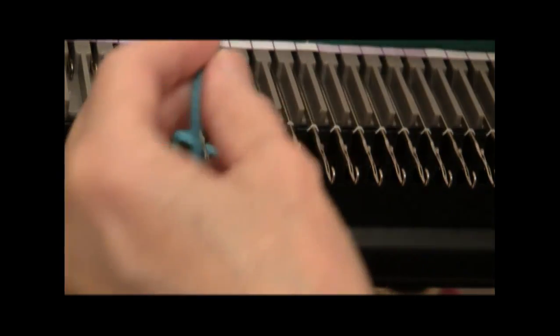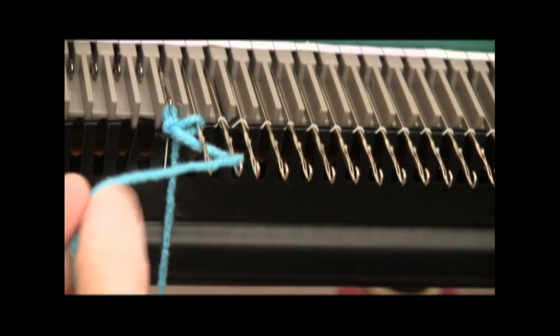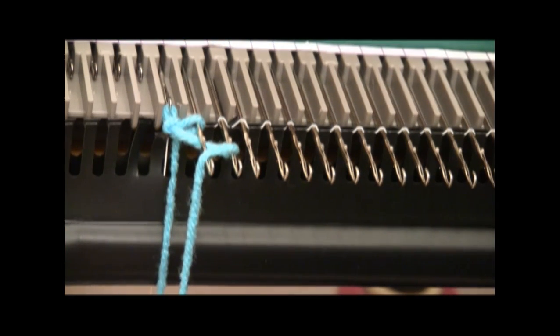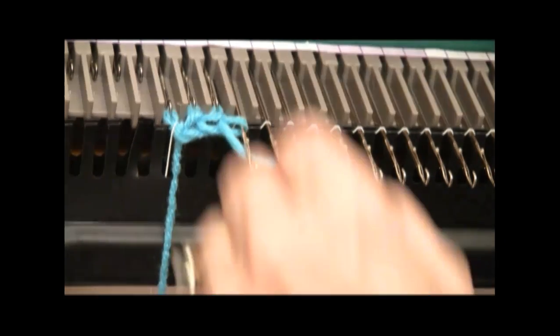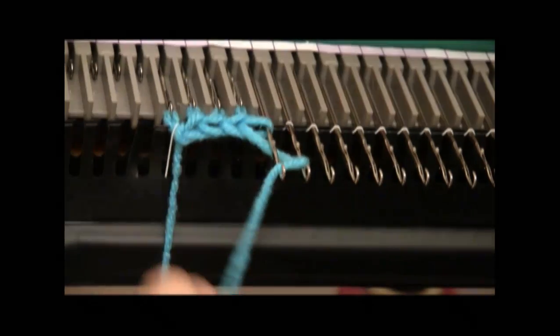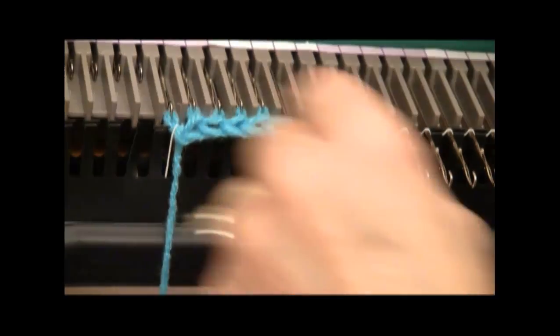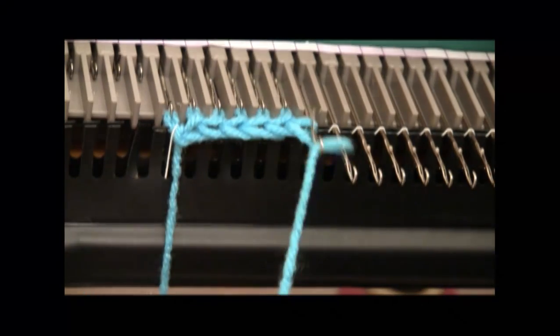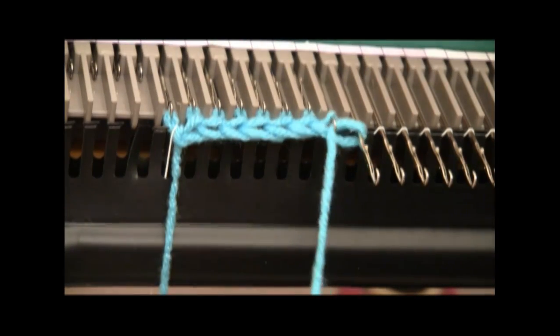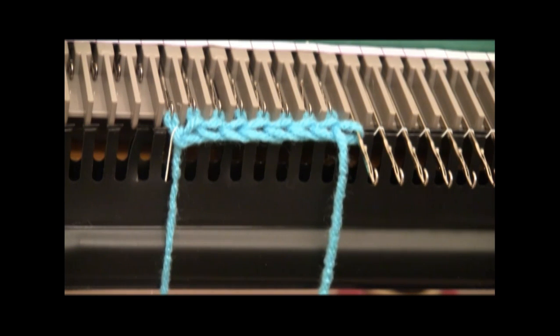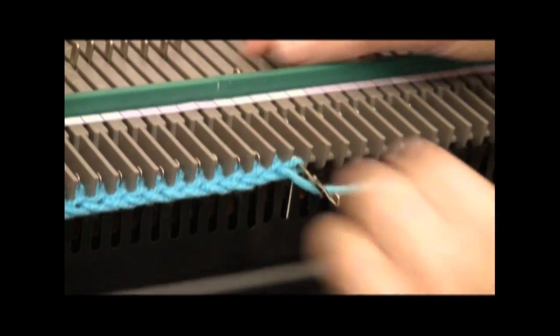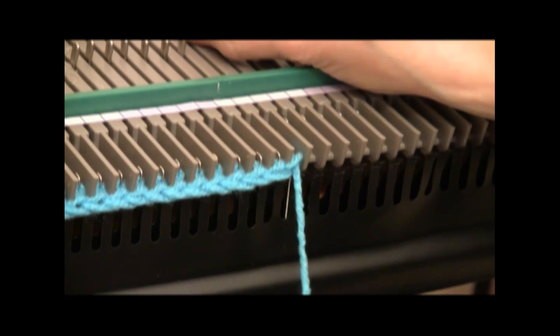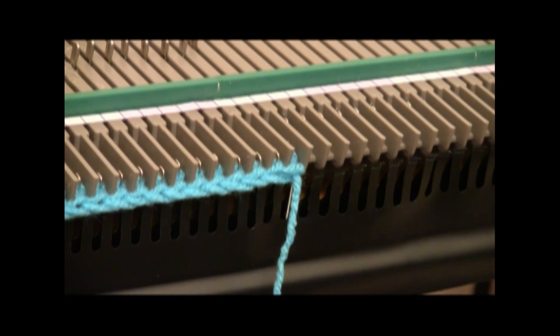Then I go under the third needle, and bring it through the loop of the second hook, and knit it through. With a little practice, this goes very quickly indeed. I will e-wrap across all of the needles. When I get to the very last needle on the right, I just wind around it and knit it through as well, and then I'm ready to begin my knitting.